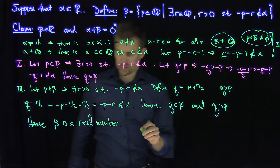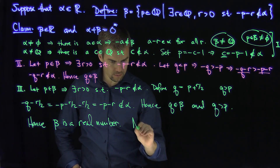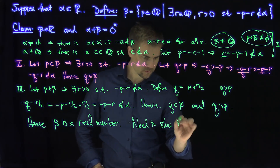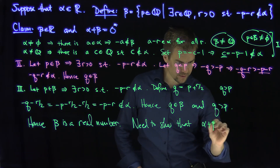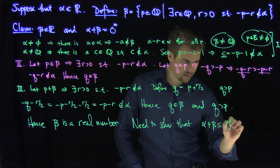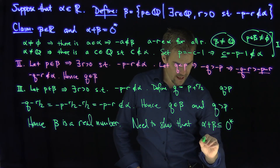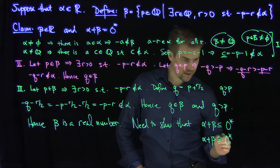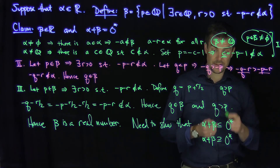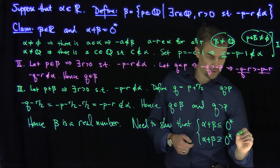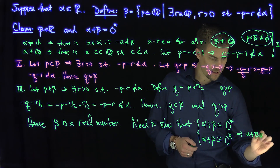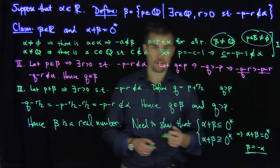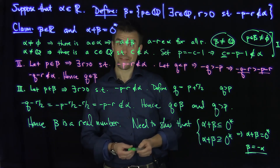We're almost out of space. In the next video, we'll show that alpha plus beta is a subset of 0-star, and that 0-star is contained in alpha plus beta — so that alpha plus beta equals 0-star, and beta will be called negative alpha, the additive inverse of alpha. Thank you very much.